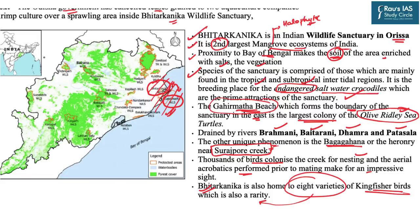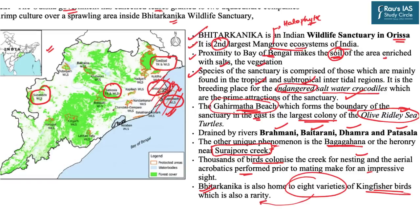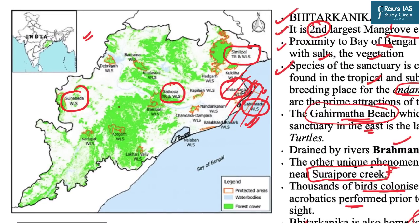The important rivers draining this wildlife sanctuary are Brahmani, Baitarni, Dharmra, and Patasala. Another important feature is the Surajpur creek, which witnesses a unique phenomenon known as Baga Gahana — thousands of birds colonize the creek for nesting and the aerial acrobatics performed prior to mating make for an impressive sight. Bhitarkanika is also home to eight varieties of kingfisher birds. In the state of Odisha, other important wildlife areas include Simlipal Tiger Reserve and Wildlife Sanctuary, Satkosya Tiger Reserve, and Sunabeda Wildlife Sanctuary. These — Sunabeda, Satkosya, Simlipal, Bhitarkanika, and Gahirmatha — are the most important wildlife sanctuaries of Odisha.